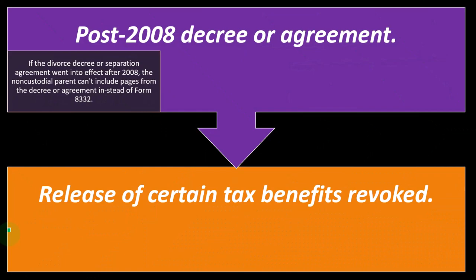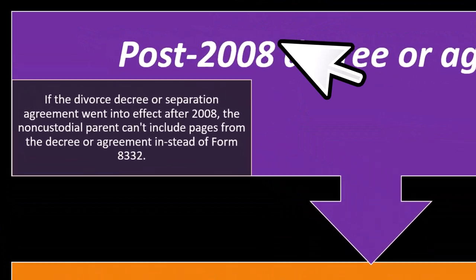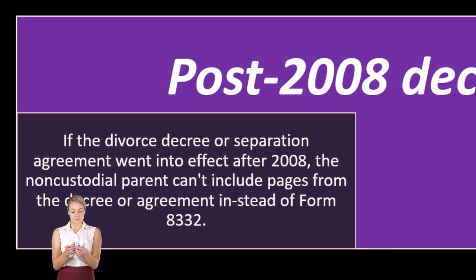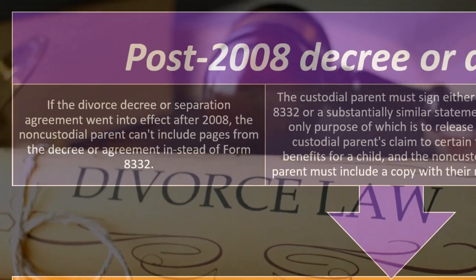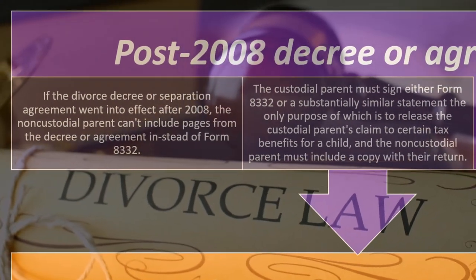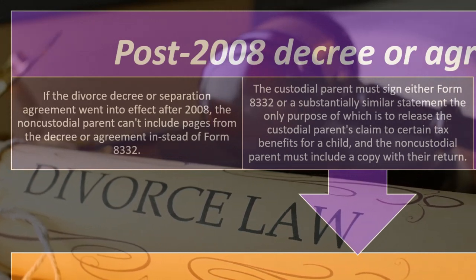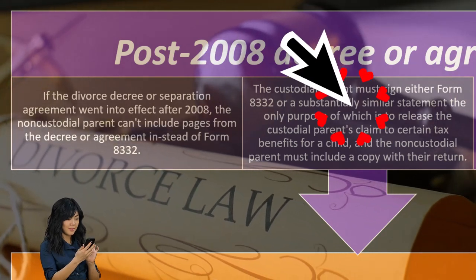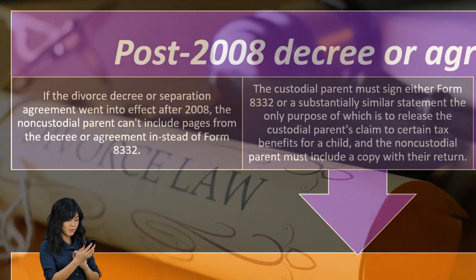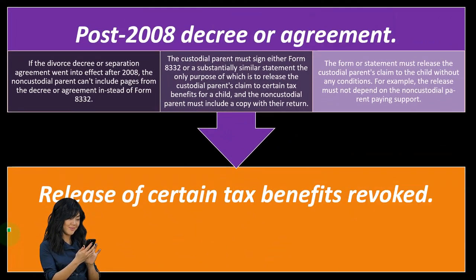Post-2008 decree or agreement: if the divorce decree or separation agreement went into effect after 2008, the non-custodial parent can't include pages from the decree or agreement instead of Form 8332. So then you've got this Form 8332. The custodial parent must sign either Form 8332 or a substantially similar statement, and the non-custodial parent must include a copy with their return.